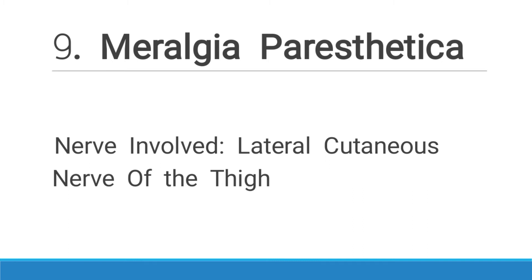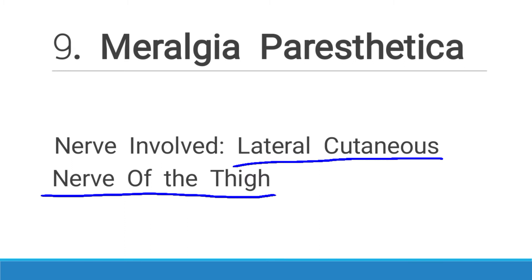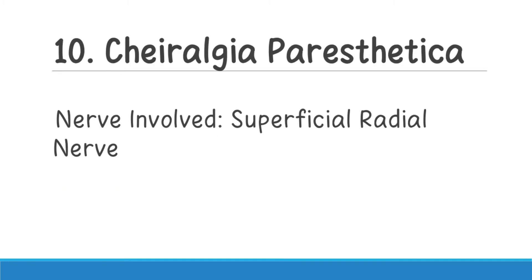Number nine is meralgia paresthetica. The nerve involved here is the lateral cutaneous nerve of the thigh. Number ten is cheiralgia paresthetica, and the nerve involved in this particular neuropathy or syndrome is the superficial radial nerve.